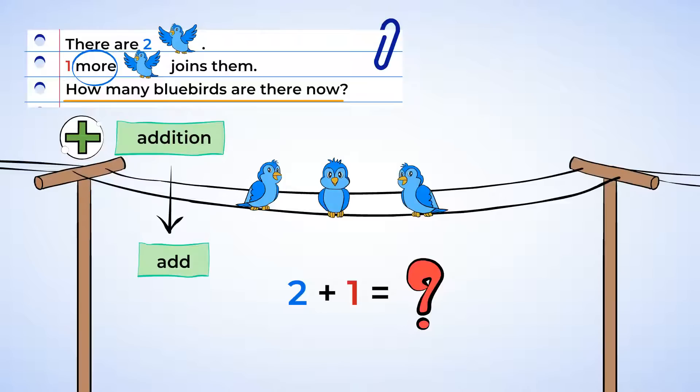And now we can add. We already have a picture showing all the birds. So we can count the birds to find out how many there are. One, two, three. There are now three bluebirds sitting together.